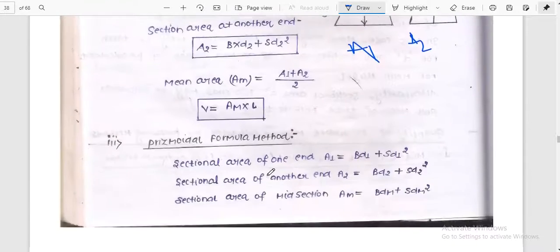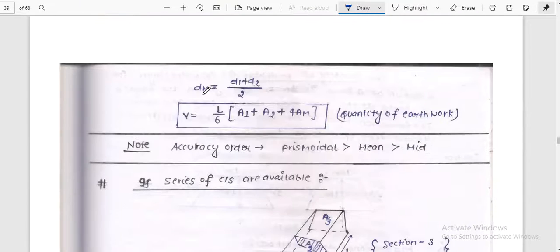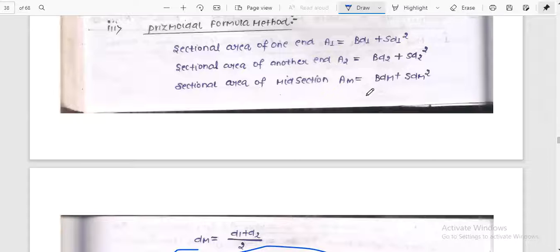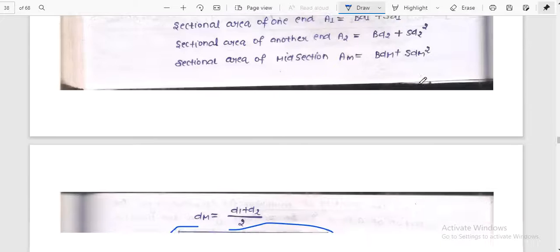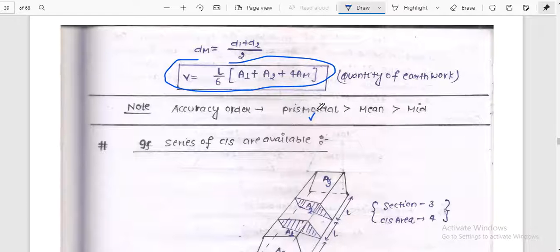Prismoidal formula is important. V is equal to L by 6 times A1 plus A2 plus 4 into Am, where Am is basically BDm plus SDm squared. So L by 6 times A1 plus A2 plus 4Am. It is very accurate. This is the prismoidal formula.